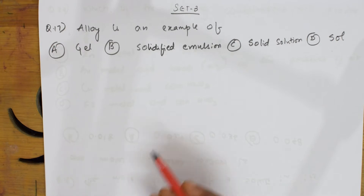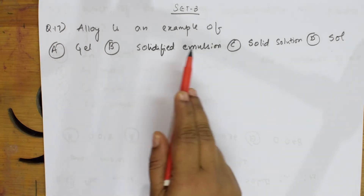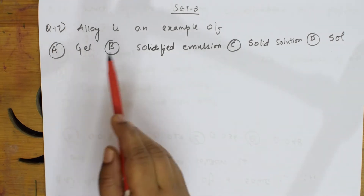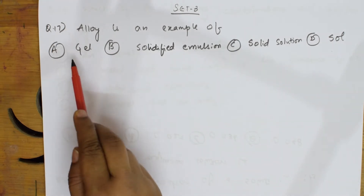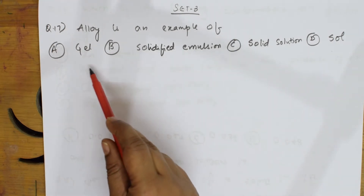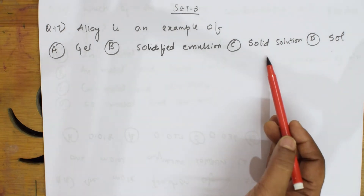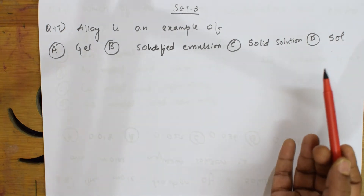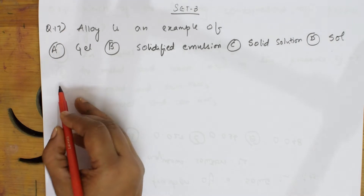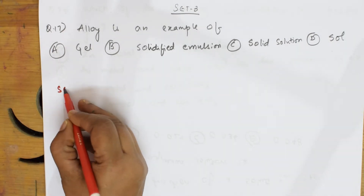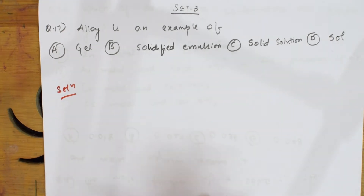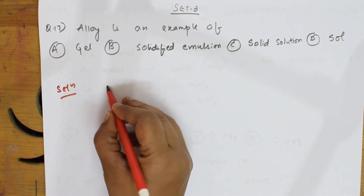This next question is a surface chemistry question of grade 12. What do they give us? They said alloy is an example of — and they have given different options: whether it is a gel, whether it is a solidified emulsion, whether it is a solid solution, or whether it is a salt. Before ticking the correct option, I have to know what all these actually are.